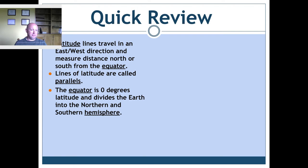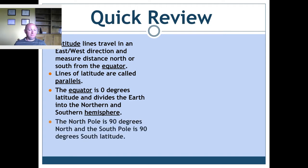The equator is zero degrees latitude and divides the earth into the northern hemisphere and the southern hemisphere — hemisphere meaning half of a sphere. The north pole is at 90 degrees north latitude. The south pole is at 90 degrees south latitude. There is no such thing as 91 degrees latitude.